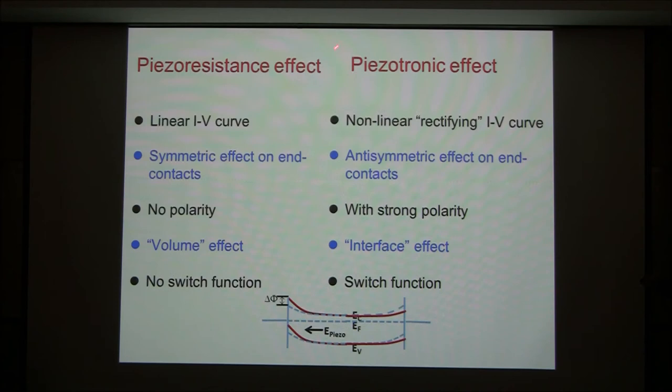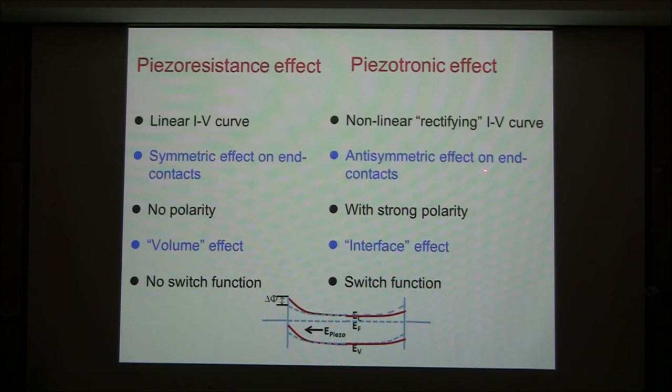So the fundamental difference between piezotronic effect and piezo-resistive effect is: any semiconductor can have piezo-resistive effect, but piezotronic effect is only for wurtzite and zinc-blende semiconductors. The piezo-resistive device does not have a non-linear I–V curve; the piezotronic device has a non-linear curve — it can be rectified. The piezo-resistive effect has a symmetric response.